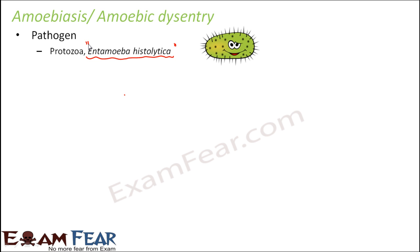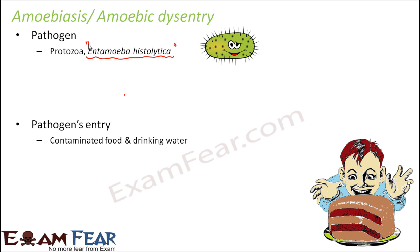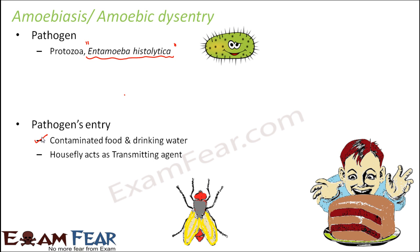How does this pathogen enter inside the body of human beings? It generally enters through contaminated food and drinking water, but it also has a transmitting agent involved. The transmitting agent is the housefly, which acts as a mechanical carrier of the pathogen.